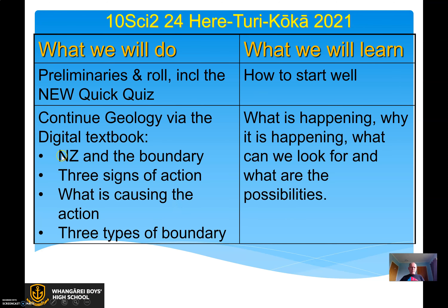So a little summary of what we've done today: talked about New Zealand and where it fits with plate boundaries; three things that give us an indication that something's going on underneath us; looked at what's causing the action — slowly turning convection currents; and three types of boundary: squeezing together, pulling apart, and sliding past each other. I'm going to link to another video about what's causing the action — it's a lovely little video, about one minute and eighteen seconds long. Thanks very much everybody. Stay safe, stay well, have fun.